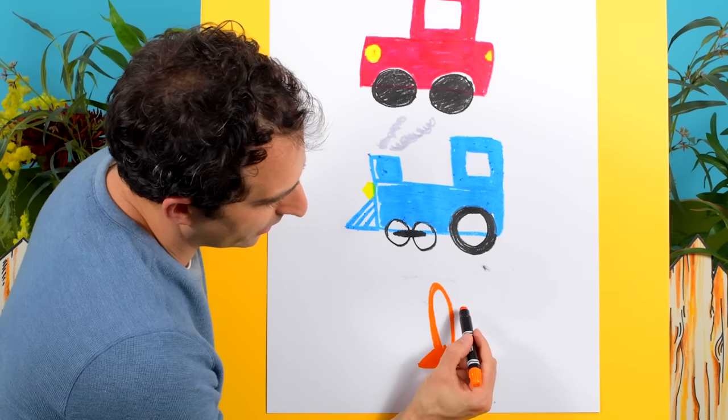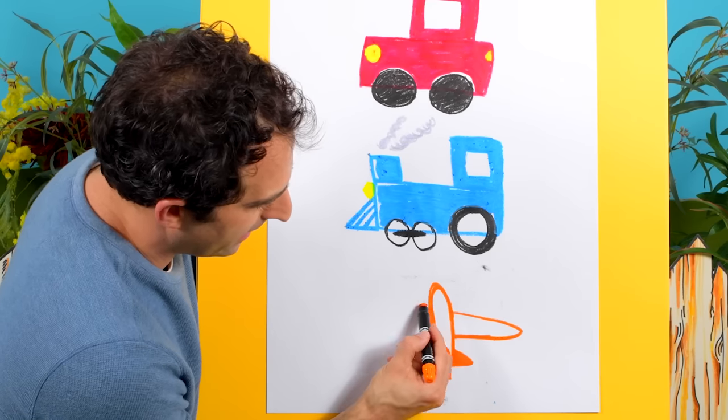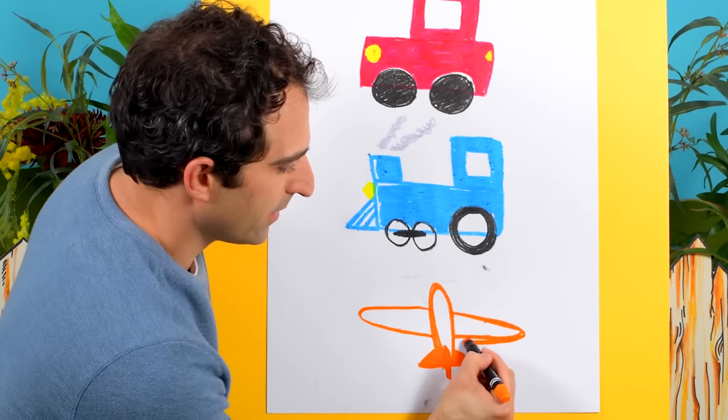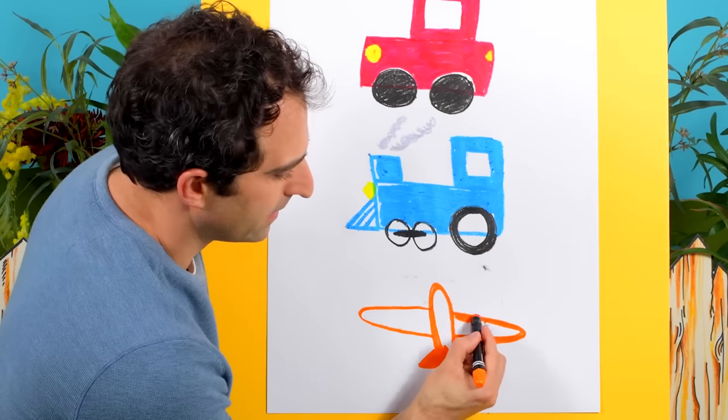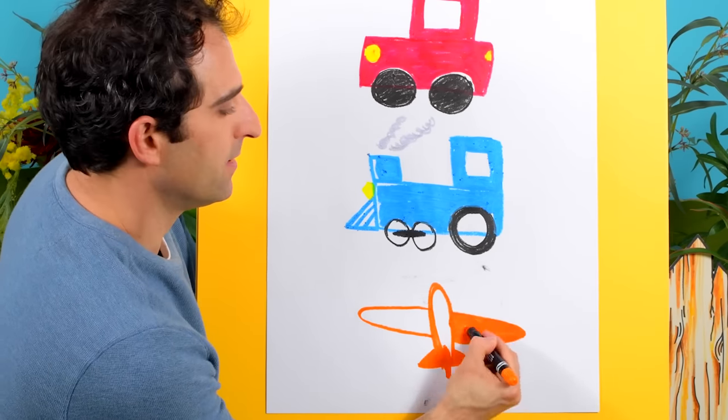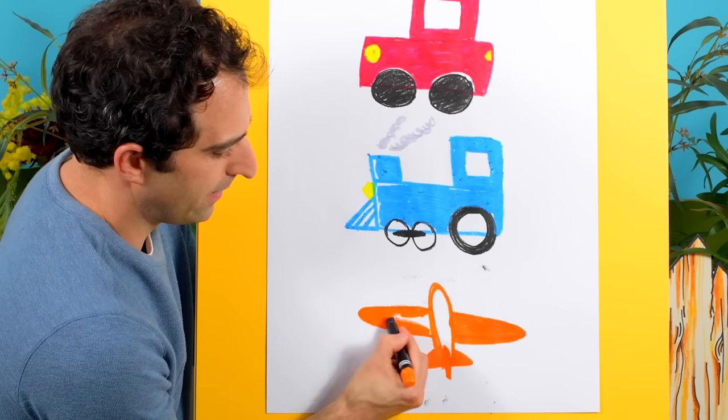But we'll put some wings on it. So, one wing that comes out like that. And then, another one on this side. There we go. And we can color those in with our orange crayon. Nice and bright. There we go.